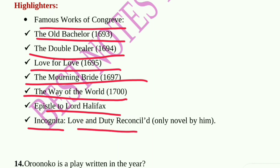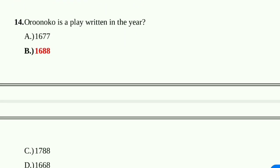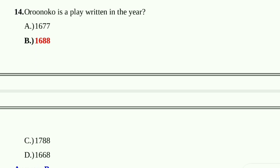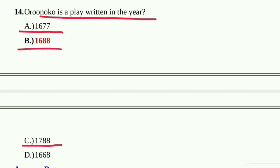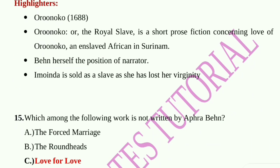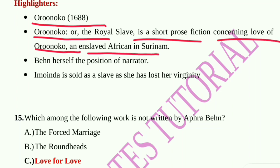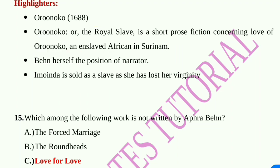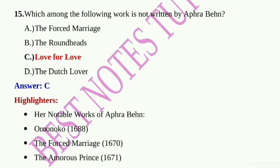Question number 14: Oroonoko was published in which year? Option A: 1677, Option B: 1688, Option C: 1788, Option D: 1668. Option B, 1688, is correct. Oroonoko, or The Royal Slave, is a short prose fiction by Aphra Behn concerning the love of Oroonoko, an enslaved African in Suriname. Imoinda is sold as a slave after losing her virginity.